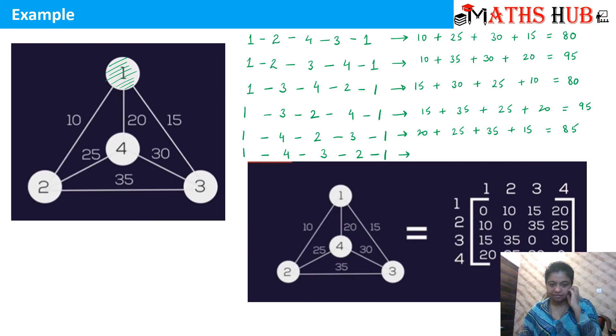And the last path: 1 to 4 is 20. 4 to 3 is 30. 3 to 2 is 35. And 2 to 1 is 10. So 30 plus 20 is 50. 50 plus 10 is 60. And 35 is 95.